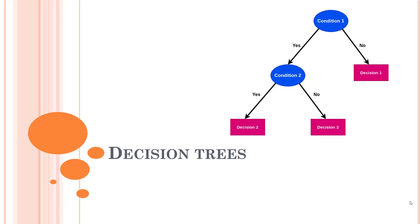Welcome back. We are going to look into the different decision tree algorithms — there are different ways to execute a decision tree. We have seen that decision tree is a supervised learning technique that can be used for both regression and classification tasks, but it is mostly preferred for classification problems.